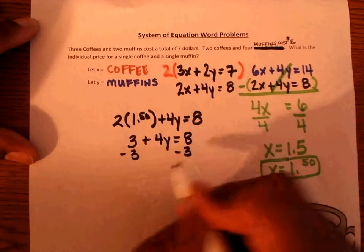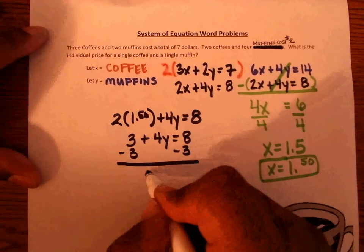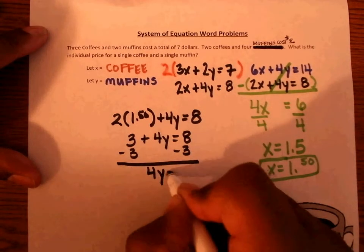Subtract three from both sides, and we have 4Y equals 5.